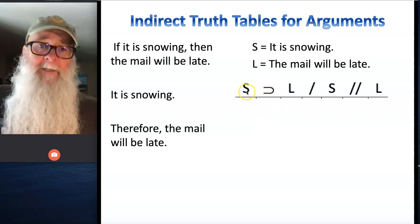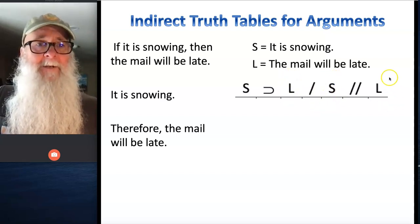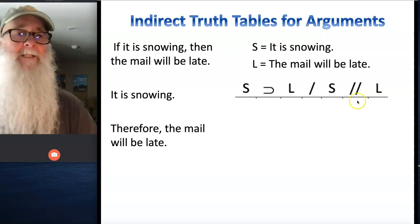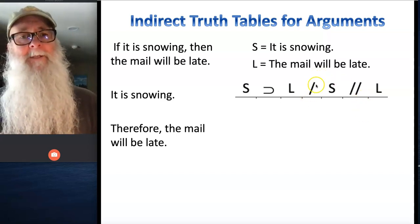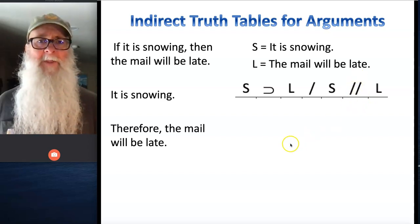In this case, it would be: if it is snowing, horseshoe, the mail will be late. Second premise says it is snowing, and the conclusion says the mail will therefore be late. And we've separated our two premise statements with a single slash, and we've separated our conclusion from the final premise with a double slash.